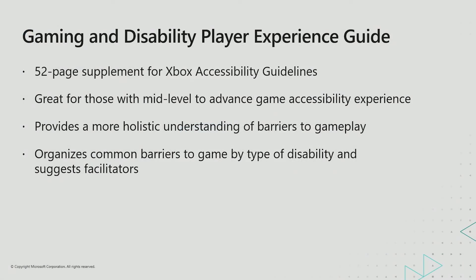The Gaming and Disability Player Experience Guide is a 52-page supplemental resource to the Xbox Accessibility Guidelines. While the Xbox Accessibility Guidelines provide a prescriptive list of game accessibility best practices organized by game area, this resource organizes common barriers to gameplay and related best practice guidelines found in the XAGs by type of disability. Like the XAGs, it's a platform-agnostic document, and it's publicly available to developers.